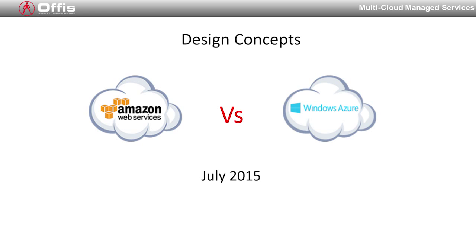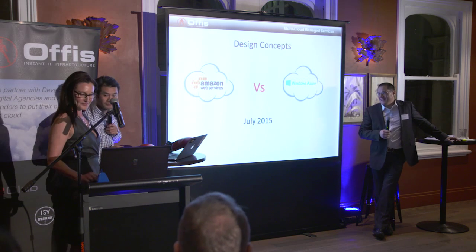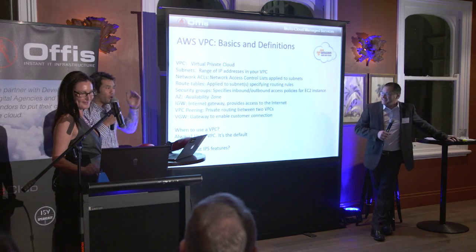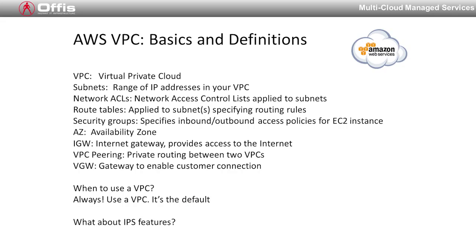So, we talked earlier about VPC. You cannot create an Amazon account without a VPC — your virtual private cloud. Inside the virtual private cloud, you've got your subnet, your network access list, your route table, and security groups. And you'll be able to sprawl that across your two availability zones. Then you've got your internet gateway.